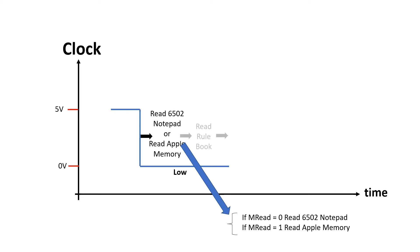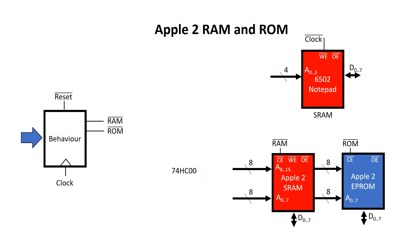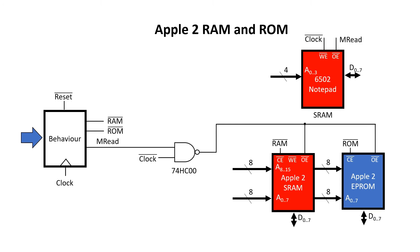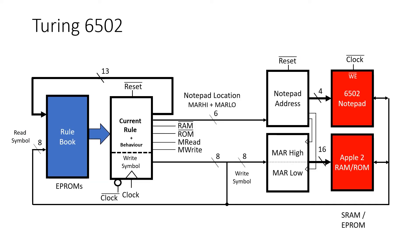Then we proceed as normal, and after the rising edge of clock we always write the value back to the 6502 notepad. But now we have another signal called MWRITE, which tells us whether to write this symbol back into the main memory or not. We can connect the MREAD signal directly to the 6502 notepad output enable pin, then NAND it with CLOCKBAR and connect it to the output enable of the main memory. So while CLOCKBAR is high and MREAD is low, we read from the 6502 notepad; when CLOCKBAR is high and MREAD is high, we read from Apple system memory. We run the write signal through an exclusive OR, then NAND it with CLOCKBAR and connect it to the write enable of the system memory.